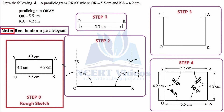In step number three, adjust the compass to a distance of 4.2 centimeters. Place the needle at O and intersect the previously constructed dotted ray to mark vertex Y. Similarly, place the needle at K and intersect the previously constructed line to mark vertex A. Pause and try to construct step number three yourself.